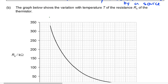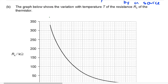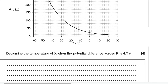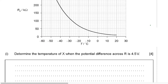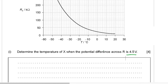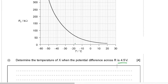The graph shows the variation with temperature T of resistance Rx of the thermistor. Determine the temperature of X when the potential difference is 4.5 volts. This problem is a little bit hard — it requires you to do multiple steps to obtain the answer.